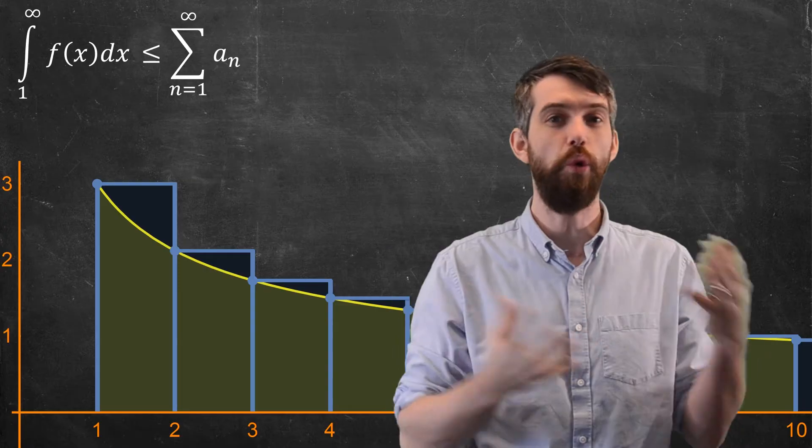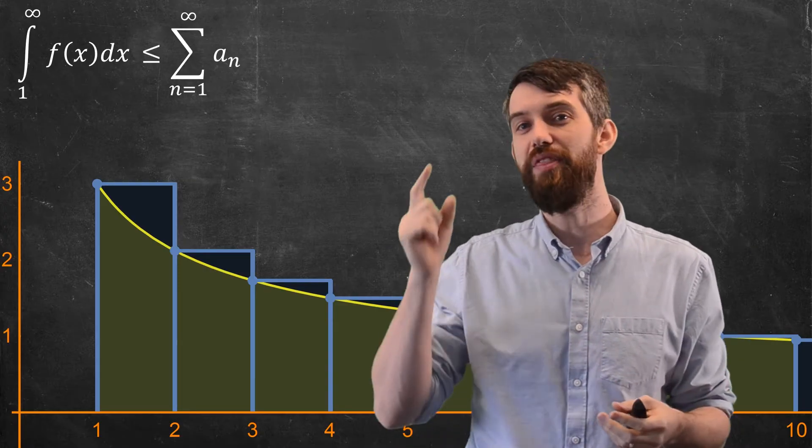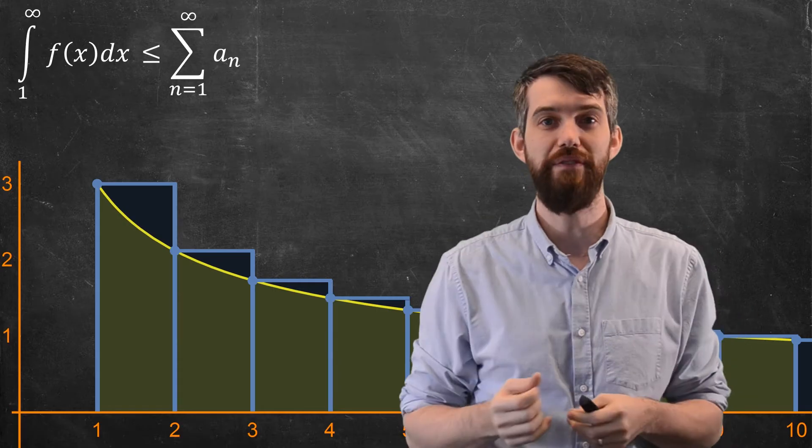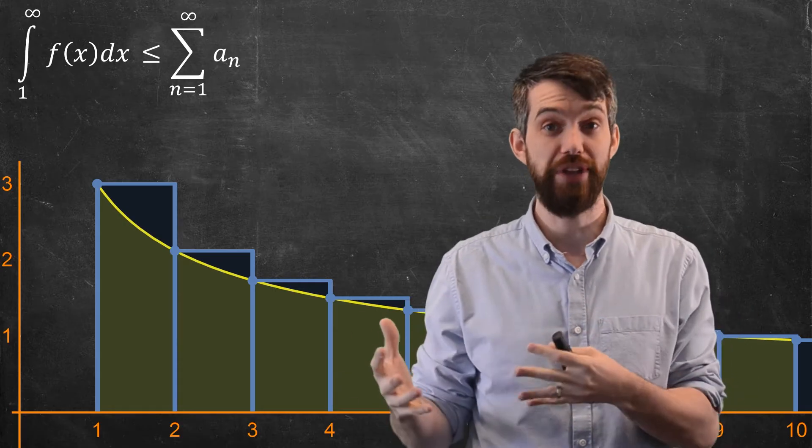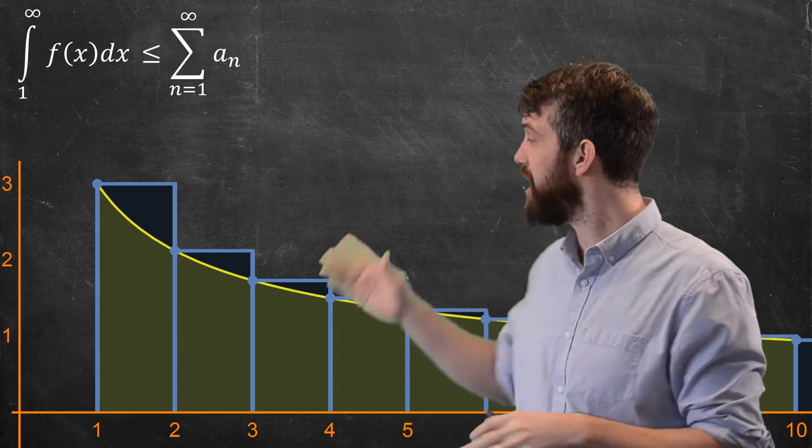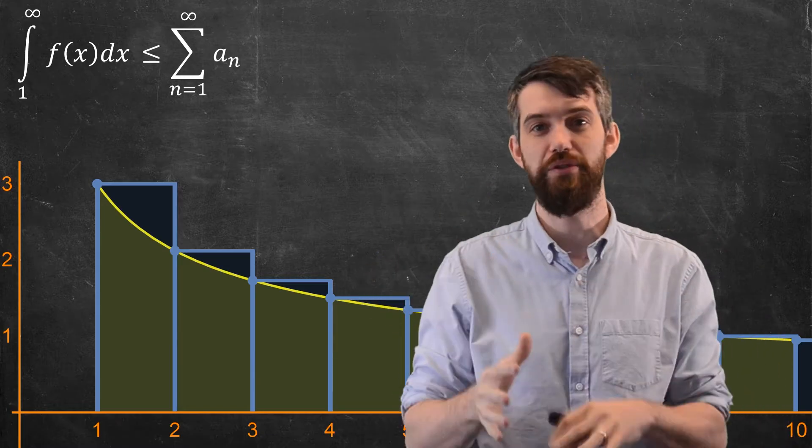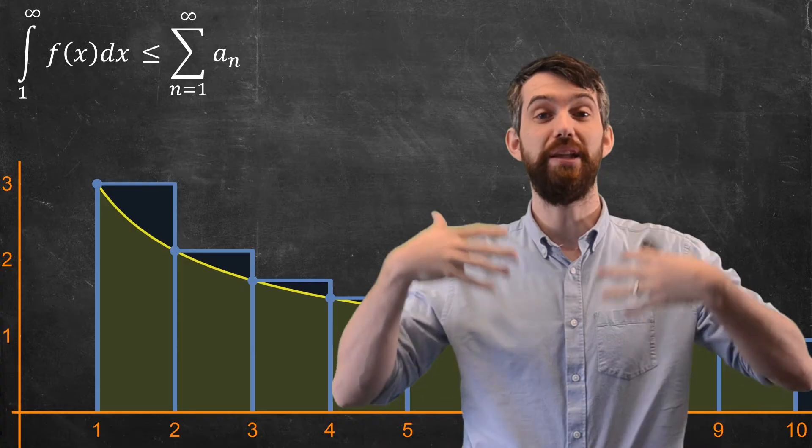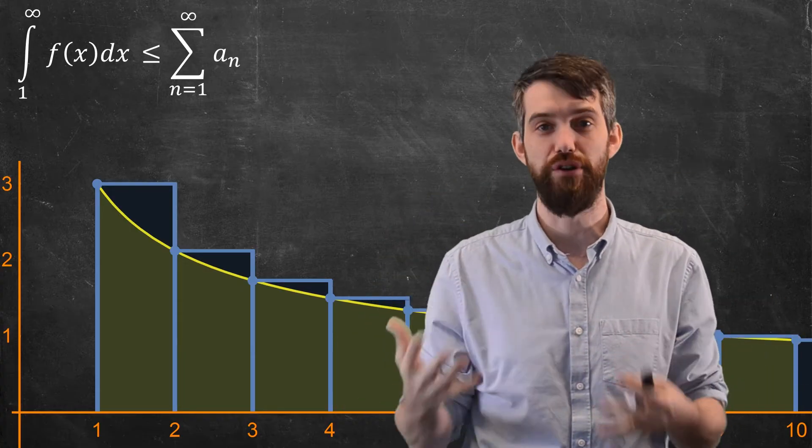And in this case, when there's this inequality between them, where you say that the improper integral is strictly less than the series, you get the following fact. Imagine the improper integral diverges, the smaller one. So the area under the curve, imagine that divergence went to infinity. Then the series, which geometrically is something that is bigger than that, must diverge as well.